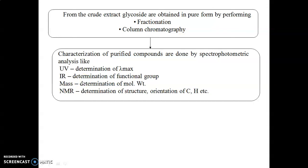From the crude extract, glycosides are obtained in pure form by fractionation followed by column chromatography techniques. After these steps, the glycosides are isolated from the mixture and purified. The isolated compound is then characterized — meaning its structure is identified — using various spectrophotometric analyses: UV spectrophotometry to determine the lambda max, and IR spectroscopy to determine the functional groups present.